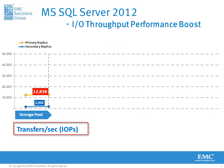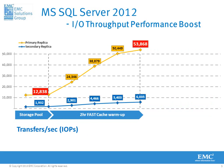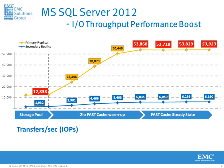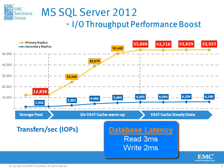EMC fast cache has boosted throughput performance. From an initial 12,000 IOPS, SQL Server 2012 running on a VNX series storage array is now able to consistently service over 53,000 IOPS, while at the same time providing amazingly low database latency of no more than 3 ms for reads and 2 ms for writes. Results clearly show the benefit of using EMC technology with SQL Server 2012.